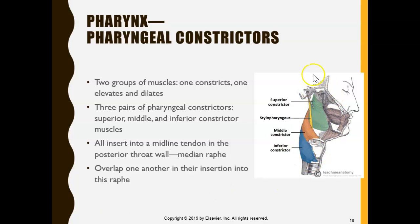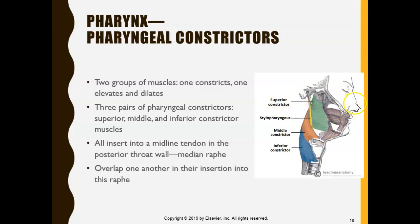Now let's look at the pharynx, which is around this area over here. What's unique about the pharynx — let's recap from what we learned before. The pharynx has three portions: it has a part next to the nose, which is the nasal pharynx; a part next to the oral cavity or the mouth, which is the oral pharynx; and a part next to the vocal cords or larynx, which is known as the laryngeal pharynx.